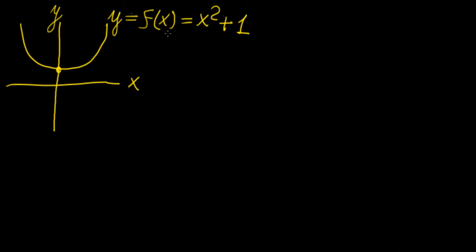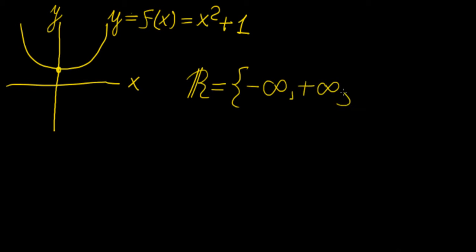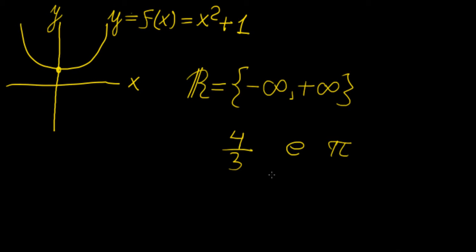Everyone is familiar with what the real numbers are. If I draw you the set of real numbers, we know that this is basically every single number from minus infinity to plus infinity, and it includes rational numbers — so things like 4 over 3 — it includes numbers such as e, which is the Euler number, numbers like pi, which in fact are not irrational.